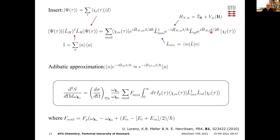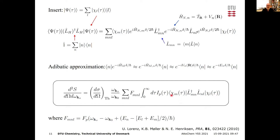If the electronic energy doesn't vary too much compared to the overall photon energy — which is many electron volts with a ~10 eV width — we can assign an average electronic energy to each state. Integrating the signal over the detector window Δω, we get a final expression: the scattering signal per solid angle, weighted by a factor depending on the pulse width and how far the intermediate energy state n is from the states in the wave packet.